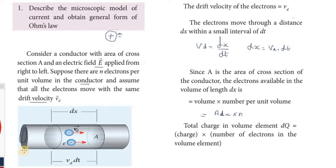Hi students, greetings from Sex Education Academy. Unit 2 Physics, Current Electricity, Long Answer 1: Describe the microscopic model of current and obtain the general form of Ohm's law. Consider a conductor with area of cross-section A and electric field E applied from right to left. Suppose there are n electrons per unit volume in the conductor.